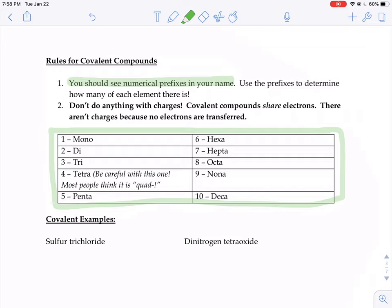Now we're not going to do anything with charges. Covalent compounds share their electrons. There aren't charges because there's no electron transfer going on. There aren't any ions in a covalent compound. Because of that, since there's no charges, how would you know how many of each part you would need? You need a prefix there to tell you.